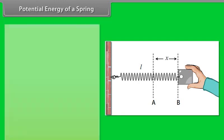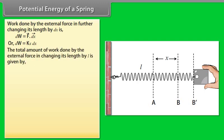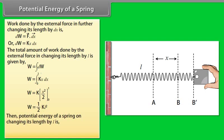Work done by the external force in further changing its length by dx is dW equals dot product of F vector and dx vector, or dW equals Kx dx. Now the total amount of work done by the external force in changing its length by L is given by W equals integration of dW. By calculating it, we get W equals one upon two KL square. Then potential energy of a spring on changing its length by L is potential energy equals W, potential energy equals half KL square.